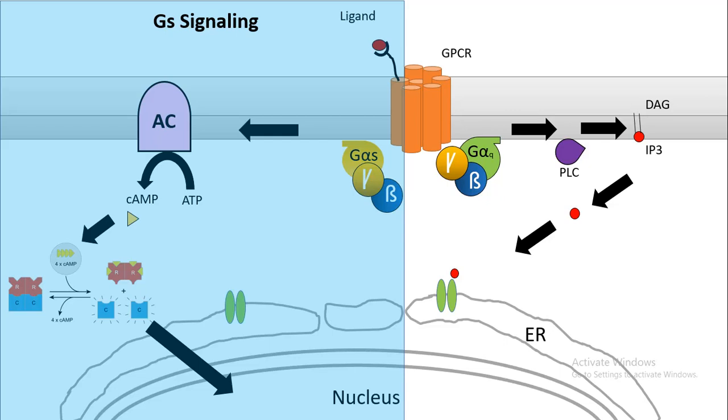That actually activates adenylate cyclase, which leads to cyclic AMP generation and thereby activation of protein kinase A and subsequent transcription of genes from the nucleus.